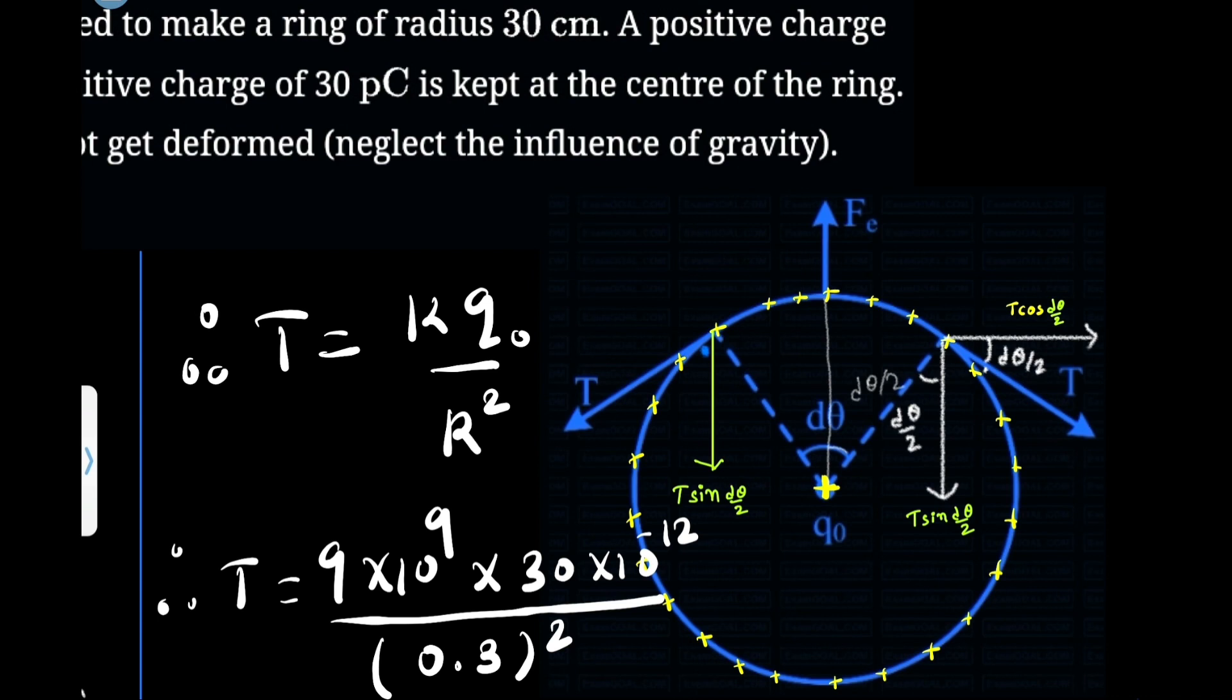Now let us try to find out the component of this tension. Let us assume this dl part of the ring subtends angle dθ at the center. Now this dθ can be divided - this arc can be divided into two parts. So this angle is dθ/2. The whole angle is dθ, so this part of the angle is dθ/2.